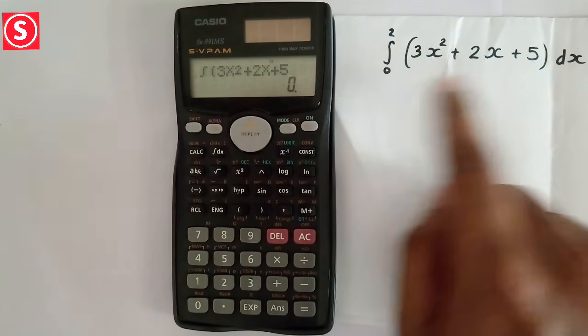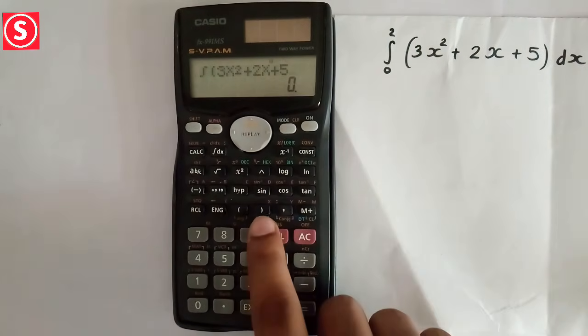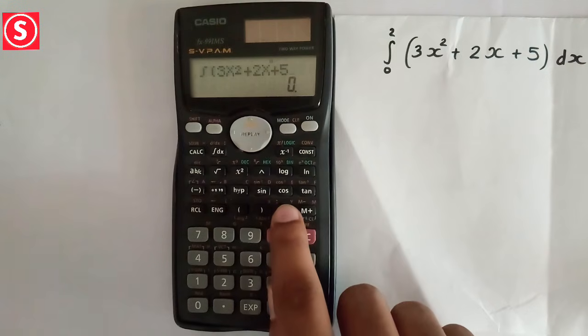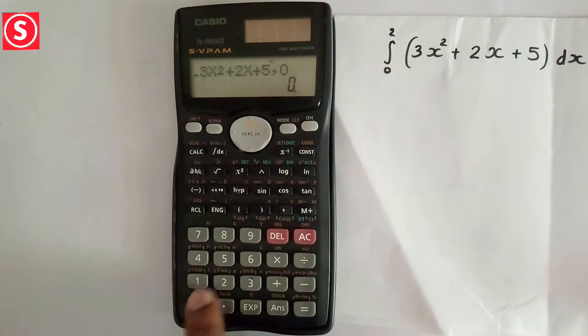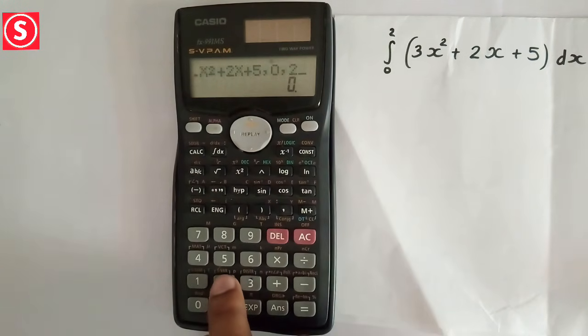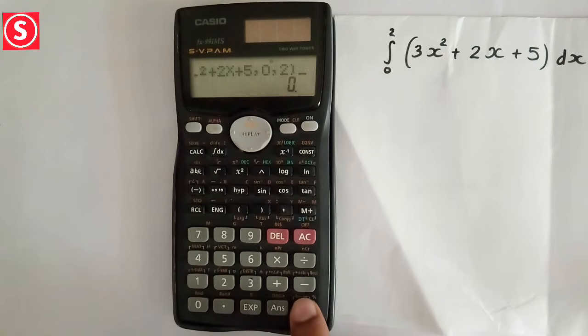For putting limit, near to the closing bracket button we can see a comma button. Press on the comma button, then put the lower limit 0. Then again put comma, then put the upper limit 2. Now close the bracket. Then press equal to.